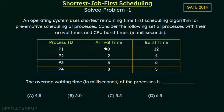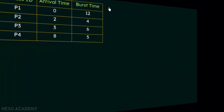We have four processes P1 to P4, with arrival times and burst times given in milliseconds. The question asks for the average waiting time of the processes. Since it is preemptive, when a process is using the CPU, if another process with a shorter remaining time arrives, the CPU will be taken away and given to the process with the shorter remaining time.